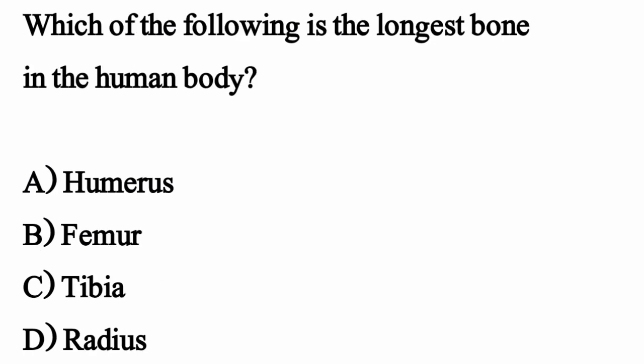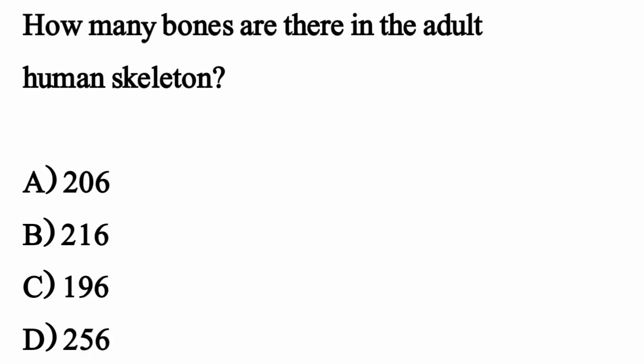Which of the following is the longest bone in the human body? The correct option is Option B: Femur. How many bones are there in the adult human skeleton? The correct option is Option A: 206.